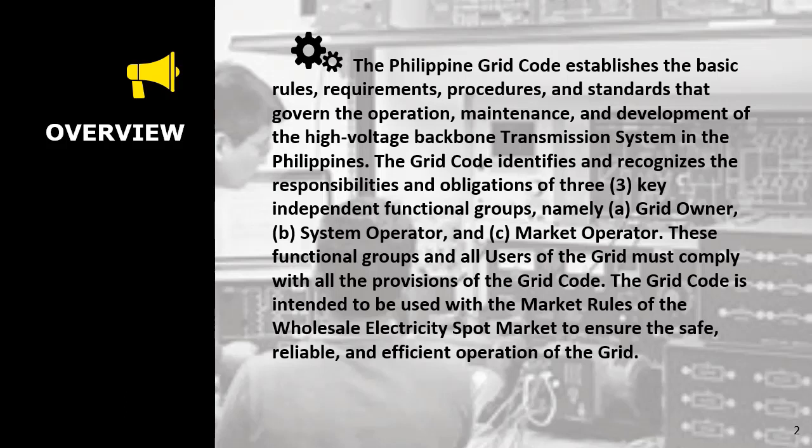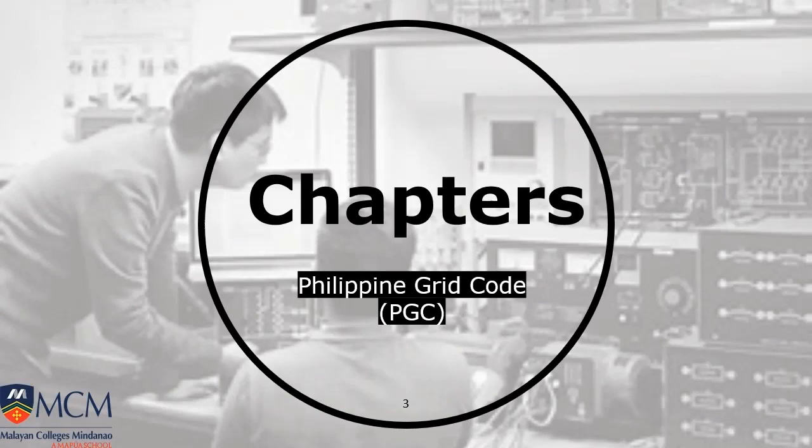These functional groups and all users of the grid must comply with all the provisions of the grid code. The grid code is intended to be used with the market rules of the Wholesale Electricity Spot Market, or WESM, to ensure the safe, reliable, and efficient operation of the grid.